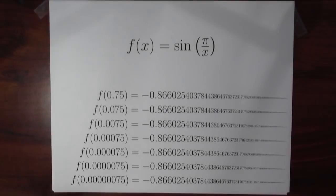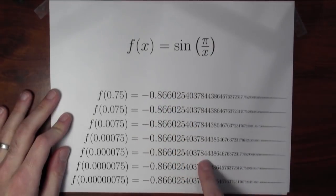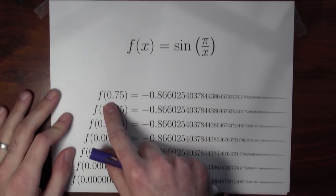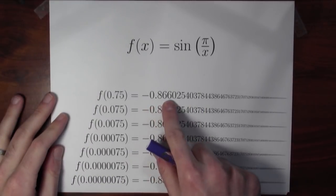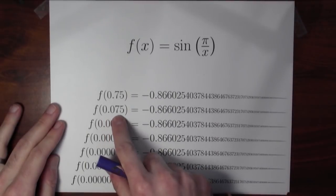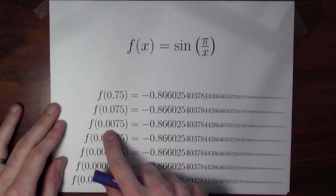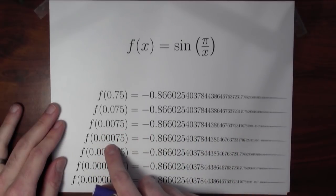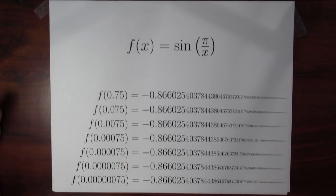But what happens if I look at some other points? Well, take a look at this example. Here's the same function, f(x) equals sine of pi over x. This function, if I evaluate it at 0.75, is this, maybe a little bit mysterious number, negative 0.866 and so forth. If I evaluate this function at 0.075, I get the same thing. If I evaluate the function at 0.0075, I get the same thing. At 0.00075, I get the same thing. So what's going on here?